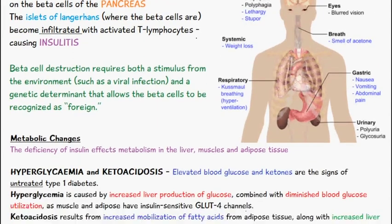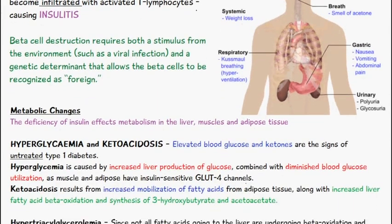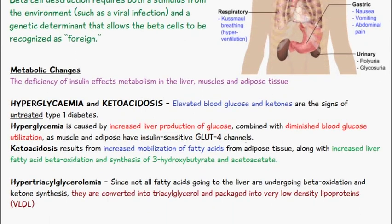The metabolic changes which are associated with a deficiency of insulin. Since insulin is such an important hormone, the lack of insulin within the human body will obviously cause some effects on metabolism. And the main organs or tissues responsible are the liver, muscles, and adipose tissue.